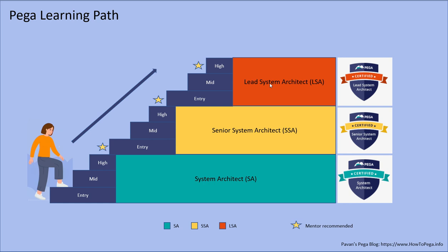Once an individual masters the lead system architect role they can be called a high-end LSA. Most applications will have one high-end lead system architect that customers trust. If you're starting your career as a system architect, set a defined career path to lead system architect. From experience, I've seen it can take roughly one year per sub-level step — entry to mid, mid to high, and so on — and overall it can take eight to nine years to move from system architect to lead system architect.